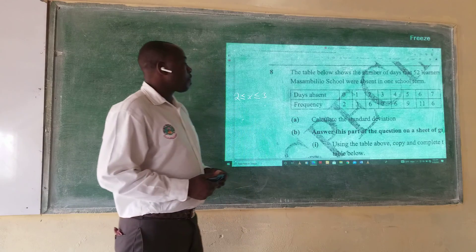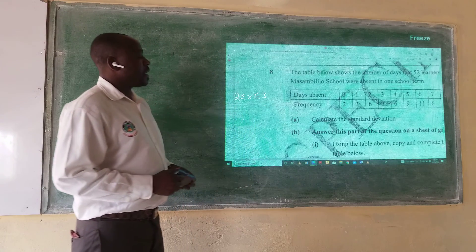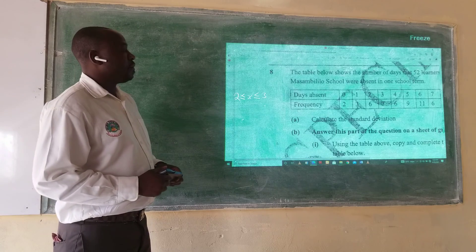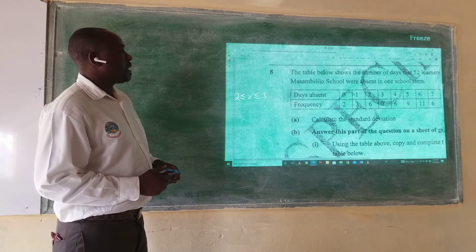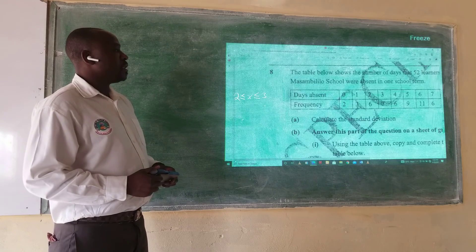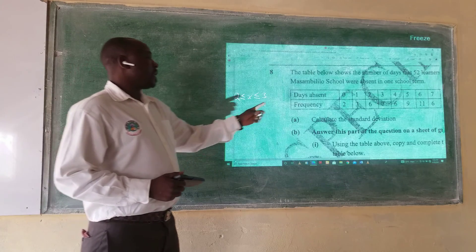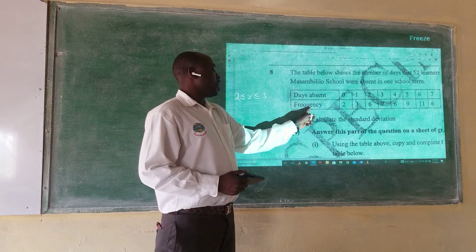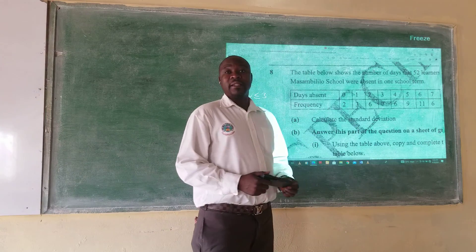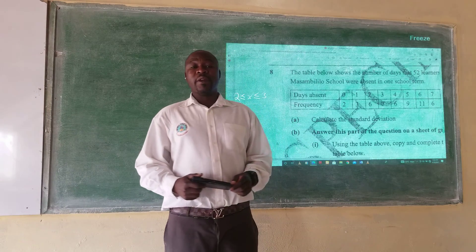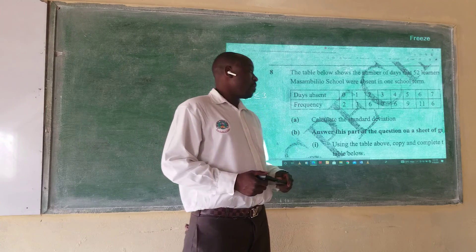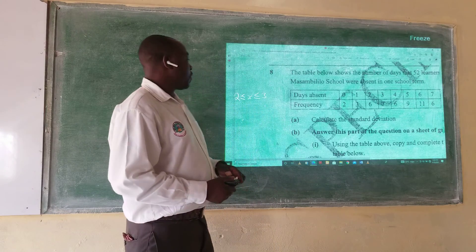So let's begin. We have a question here that reads: the table shows the number of days that 52 learners at Masambirino School were absent in one school term. We have days absent and frequency, and we are looking at the standard deviation. In your examination, this question is going to give you 6 marks.